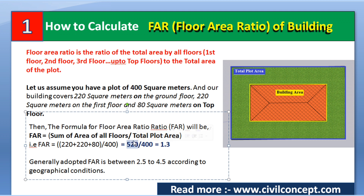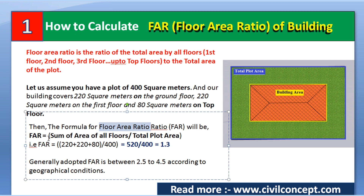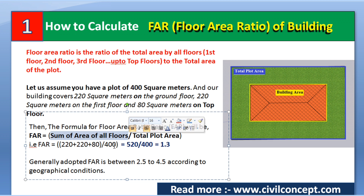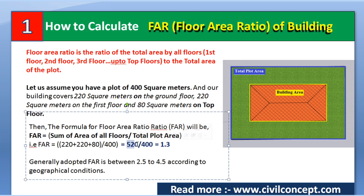The formula for Floor Area Ratio (FAR) is: sum of area of all floors divided by total plot area. The sum of all floor areas is 520 square meters and the total plot area is 400 square meters. So FAR = 520 / 400 = 1.3. This is the value of FAR. Generally, the adopted FAR is between 2.5 to 4.5, depending on the geographical condition of the country and the rules of the municipality.